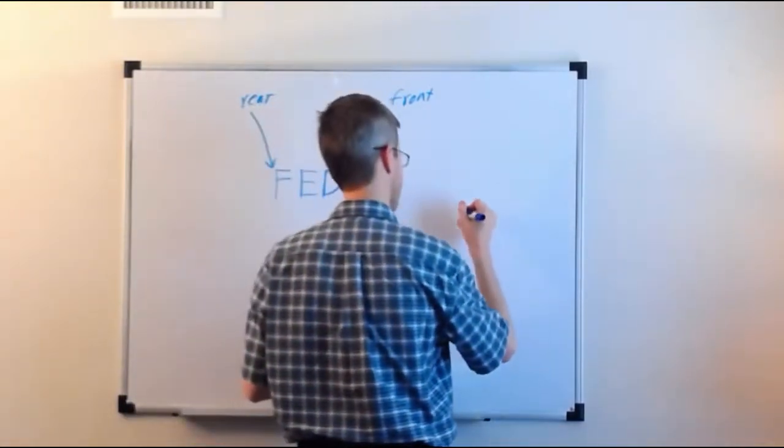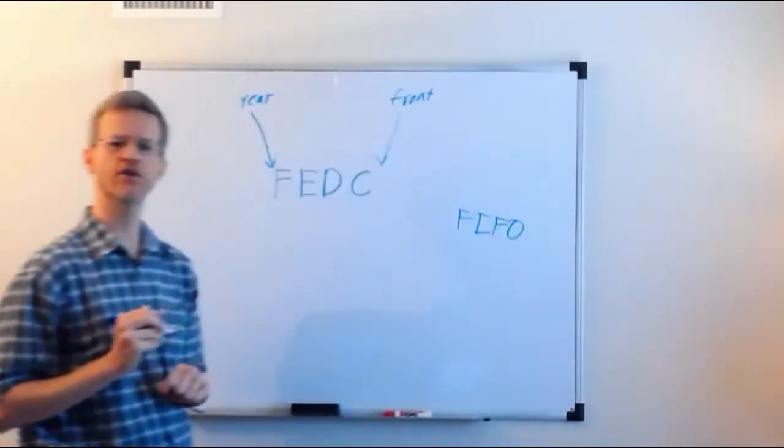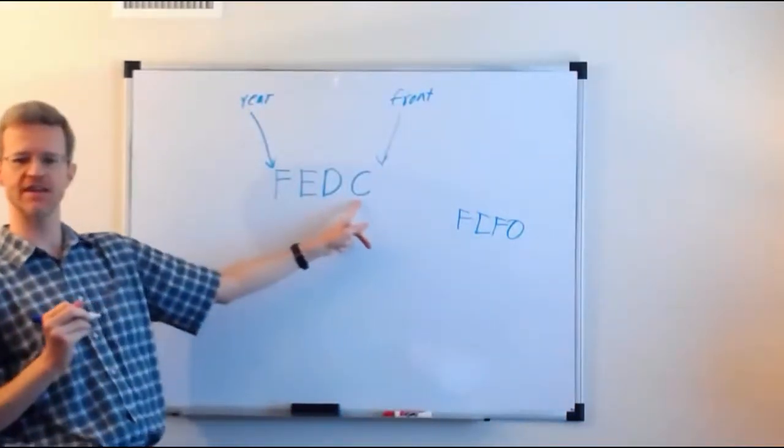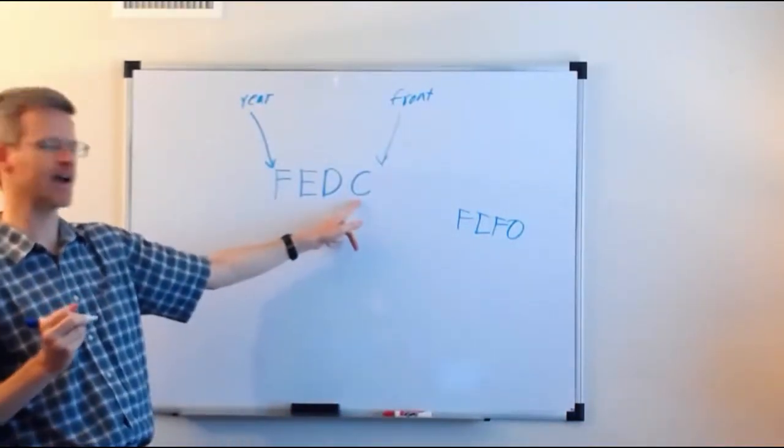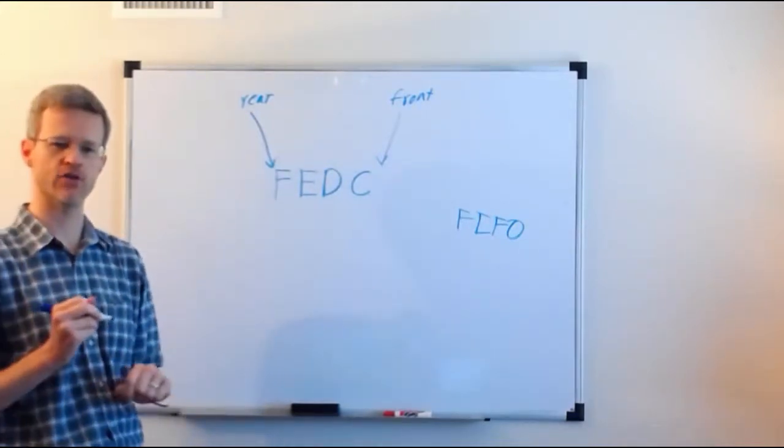So a queue is a FIFO data structure. First in, first out. Because the first person to get in the queue, the first person to get in line, is the first person to get called to buy their movie ticket.